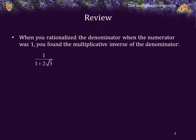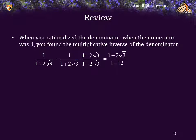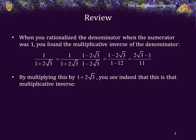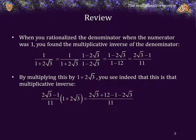When you rationalize the denominator when the numerator was 1, you were actually finding the real multiplicative inverse of the denominator. For example, here we have 1 over 1 plus 2 root 3. Multiplying by the radical conjugate over that same radical conjugate, we can use FOIL in the denominator to get the result that this is equal to 2 root 3 minus 1 over 11. By multiplying this by 1 plus 2 root 3, you will see that this is indeed the multiplicative inverse — we apply FOIL again and simplify the numerator to get 11 over 11, or 1.